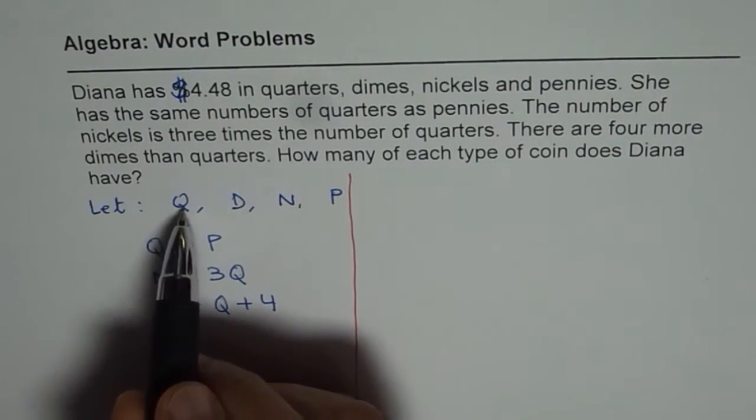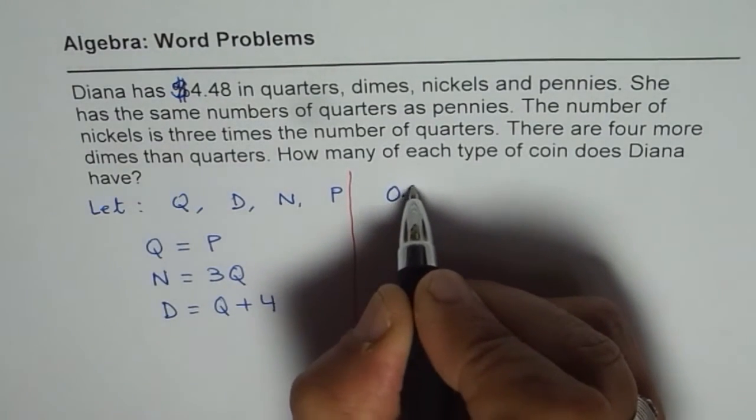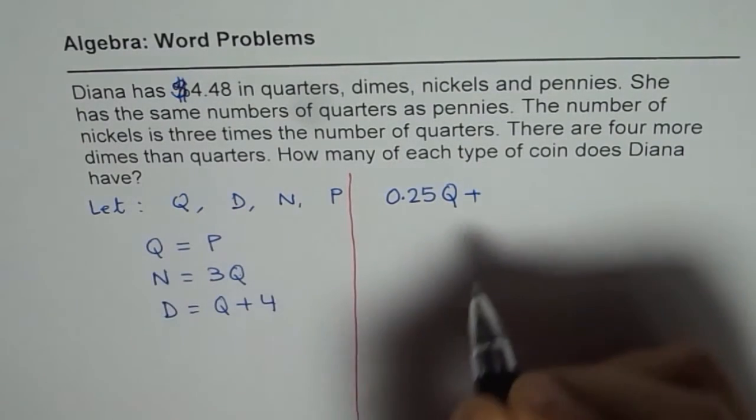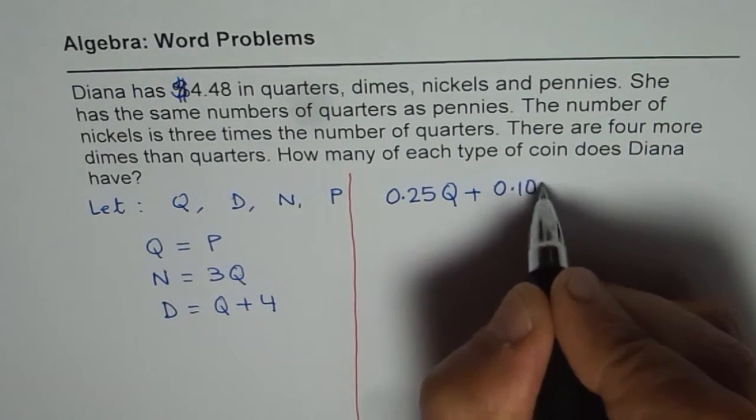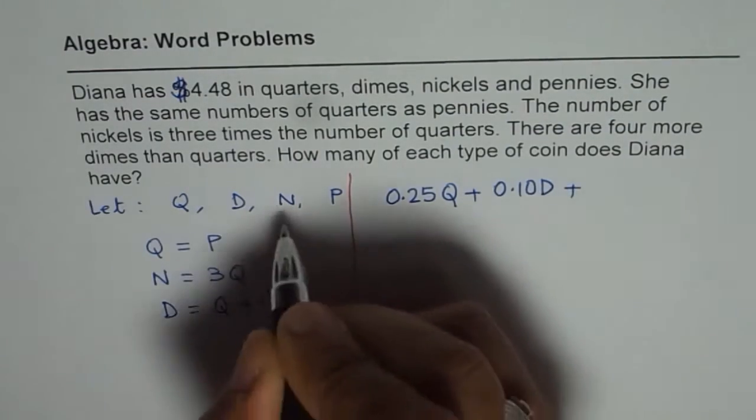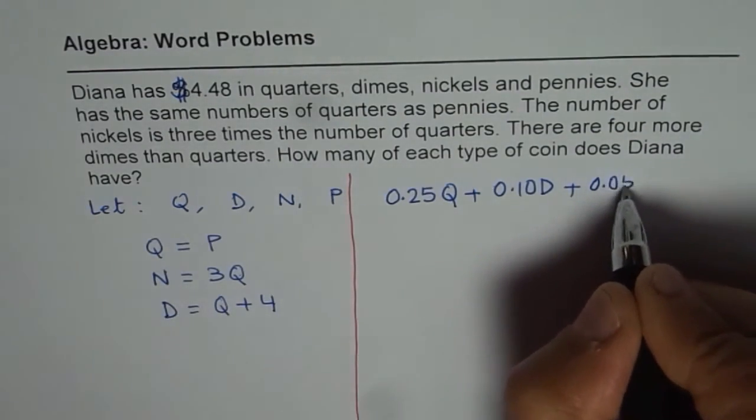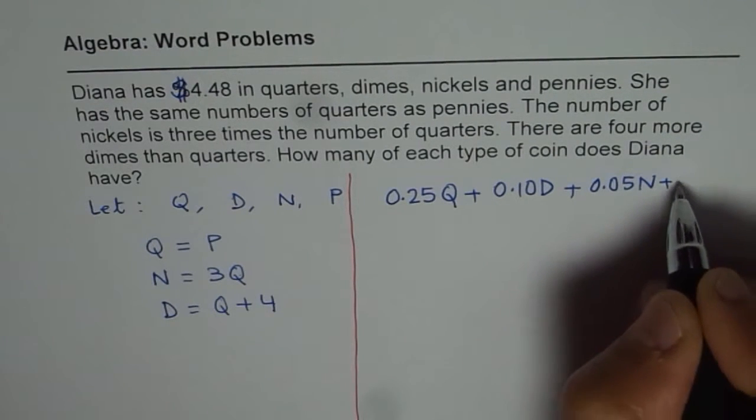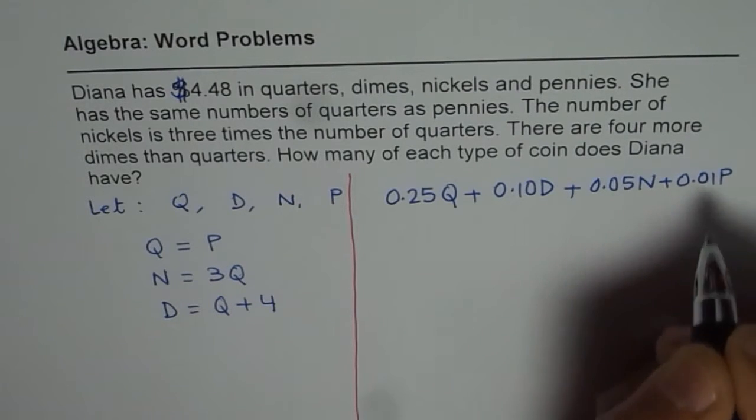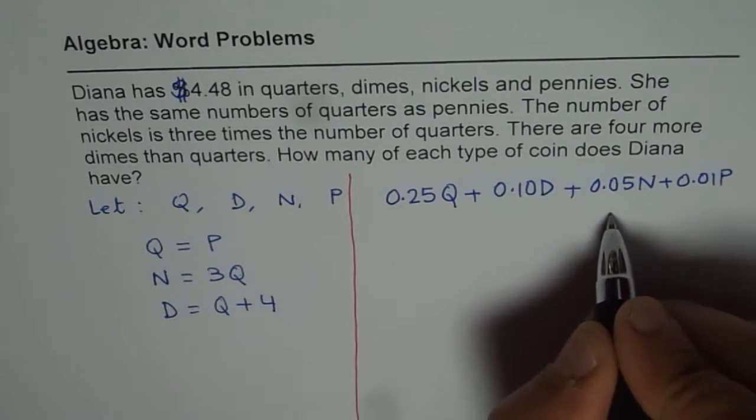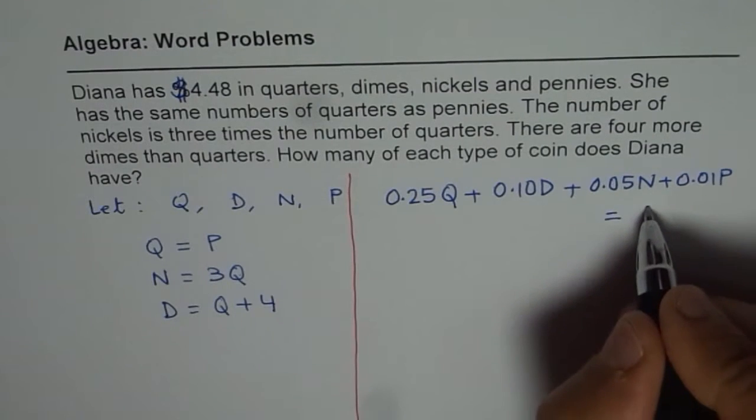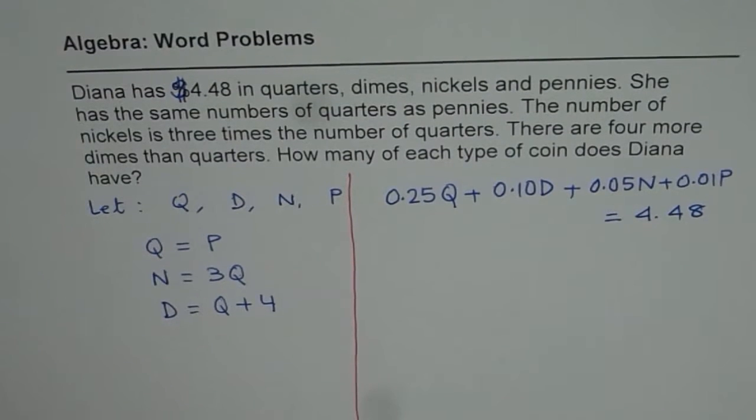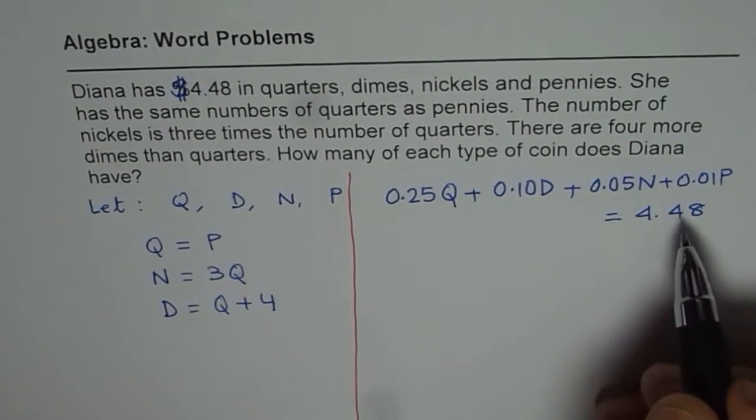Now each quarter is 25 cents. So we can say 0.25 times a quarter plus dime is 10 cents, 0.10 times the dime. Nickel is 5 cents, 0.05 nickels. Plus penny is 1, so 0.01 penny. All this is equal to $4.48.